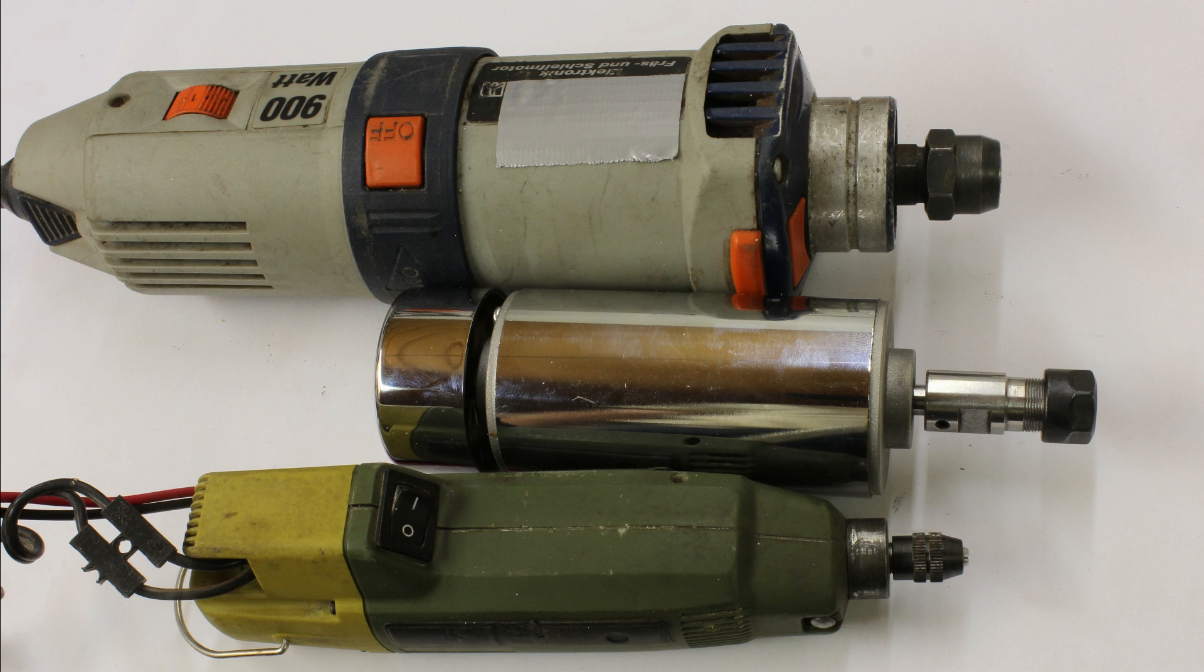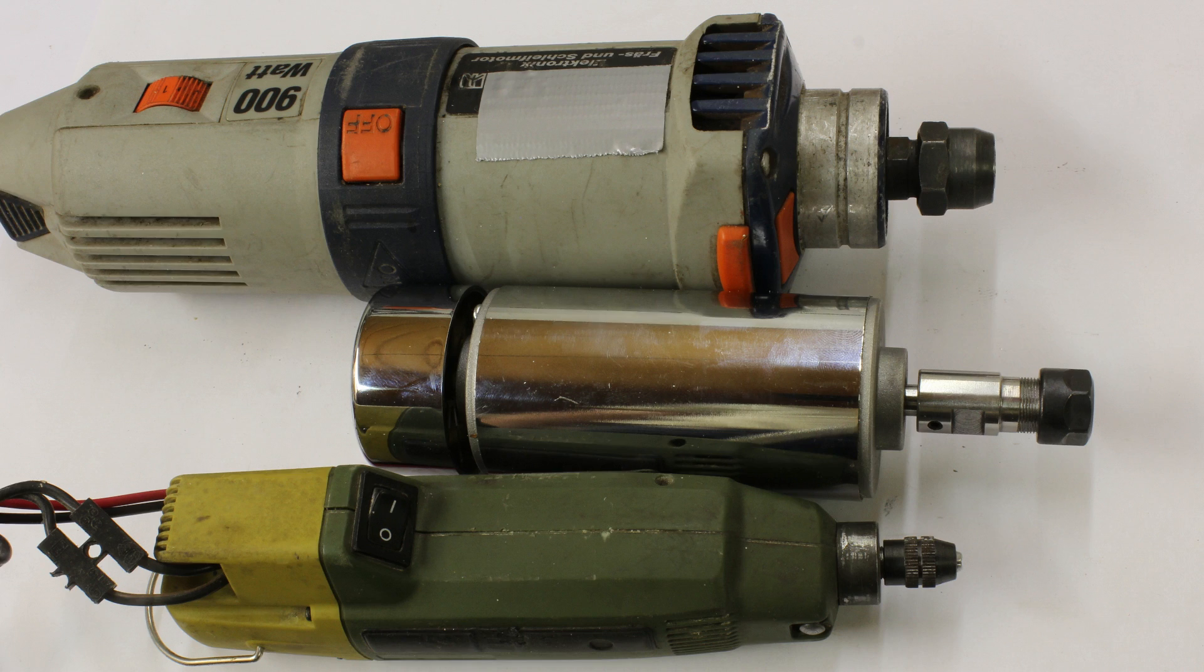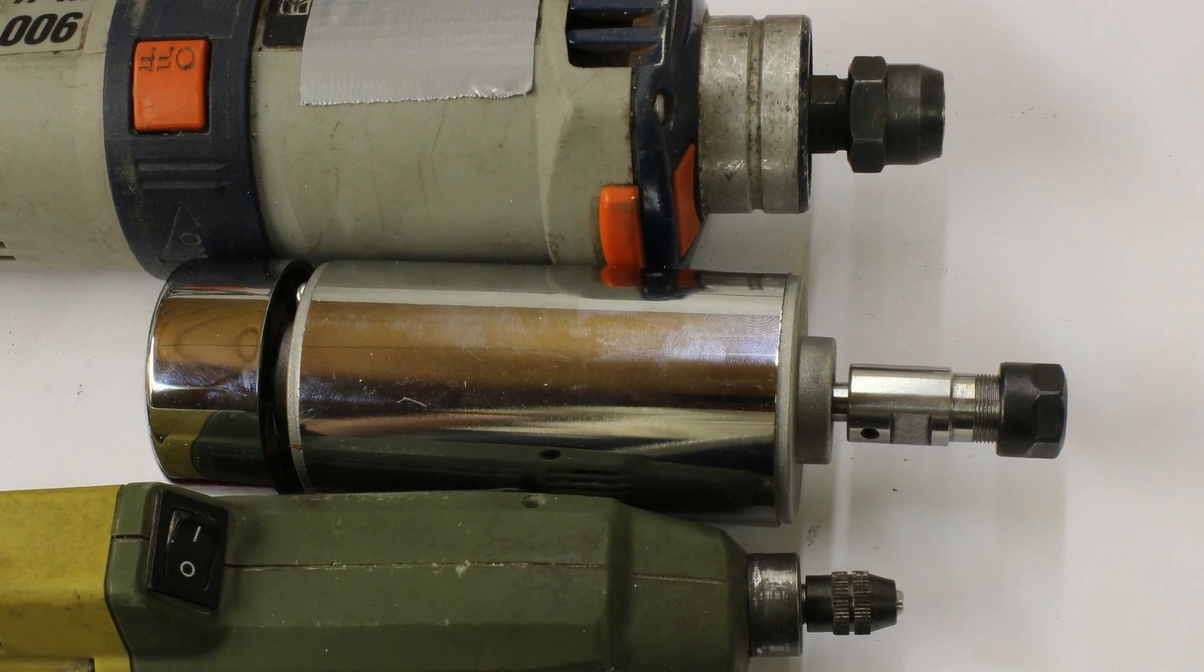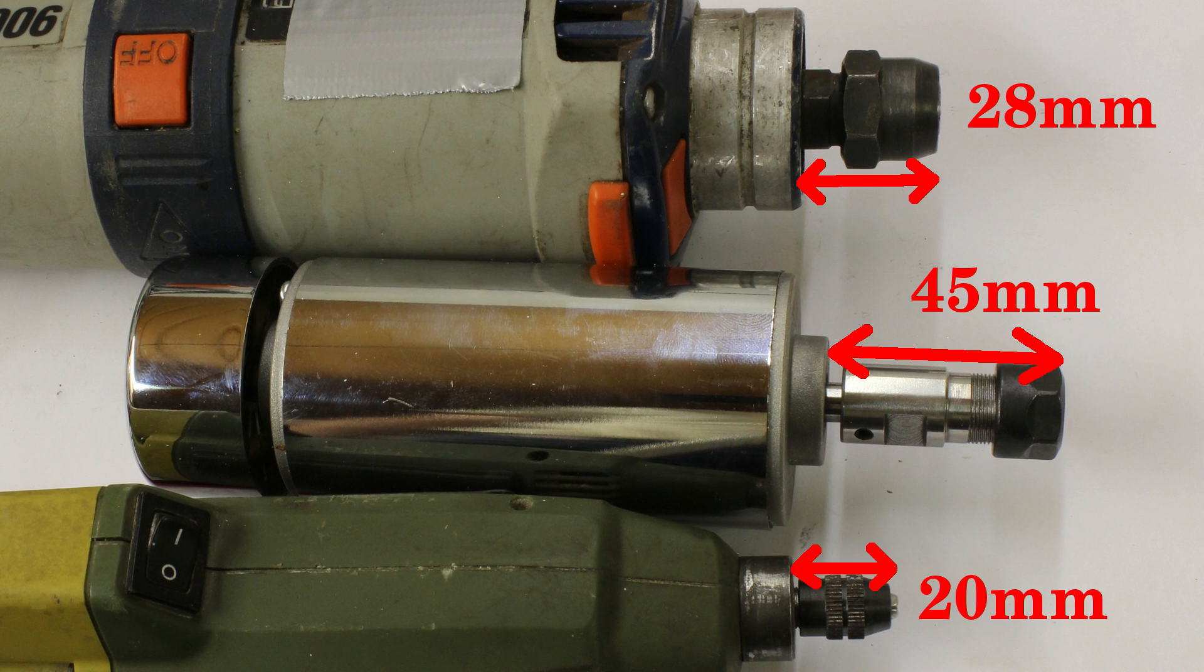The rule of thumb is: the higher the electric input power, the more solid the build of the motor. Furthermore, the distance between motor housing and the tip of the collet should be as short as possible.